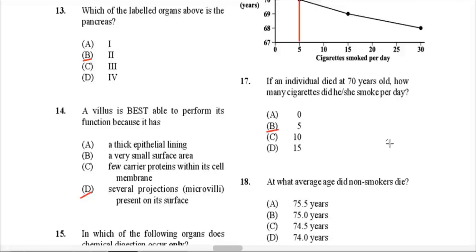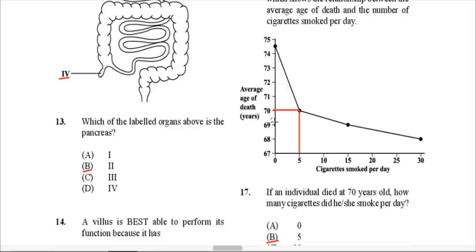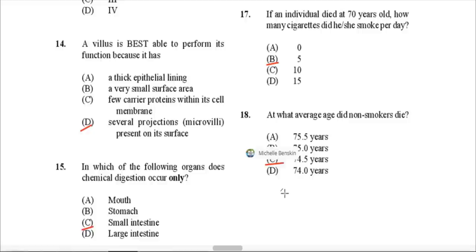Question 18: At what average age did non-smokers die? To find non-smokers, look at zero cigarettes smoked per day on the x-axis, then go up to the graph line and read across to the y-axis. Non-smokers have an average age of death between 74 and 75 — approximately 74.5 years. So the answer is C.